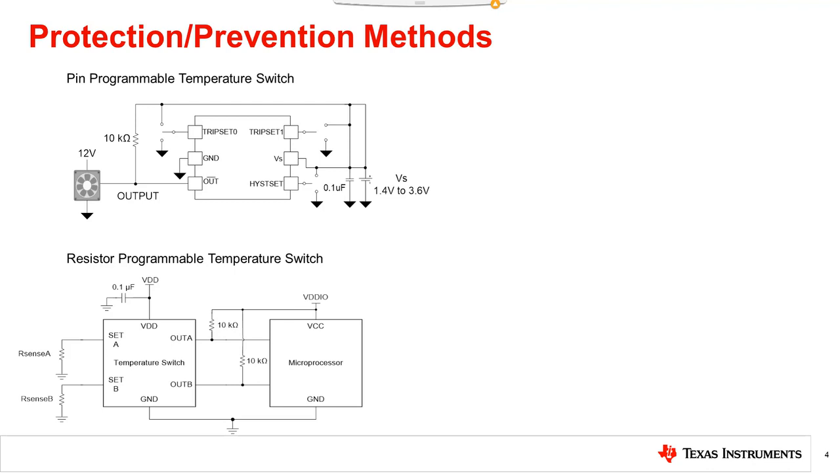Temperature switches also offer guaranteed temperature accuracy for trip point with hysteresis, have various special programming options including resistor, pin, and factory programmability. Some parts even offer analog outputs for logging purposes.